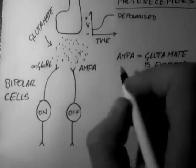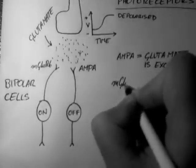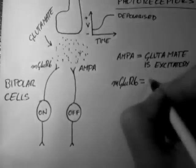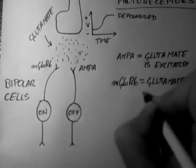So for AMPA, glutamate is excitatory. But for mGluR6, glutamate is inhibitory.